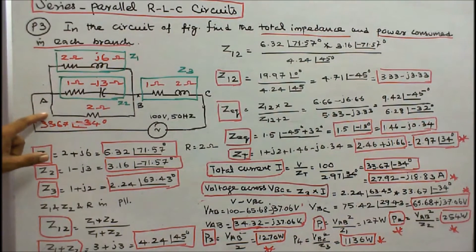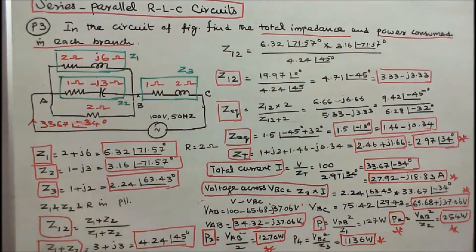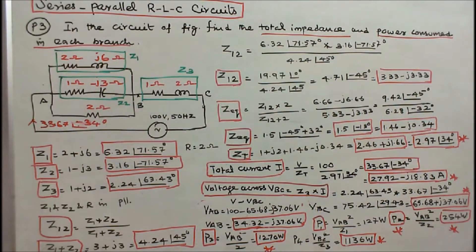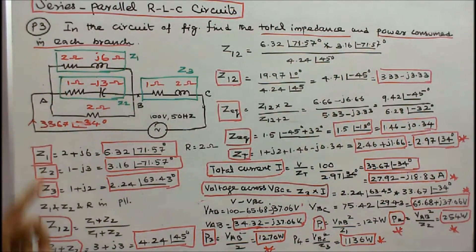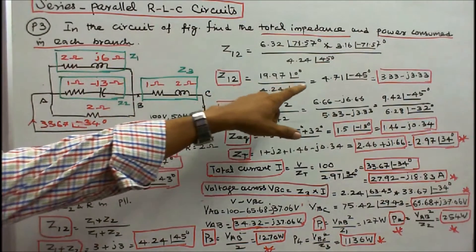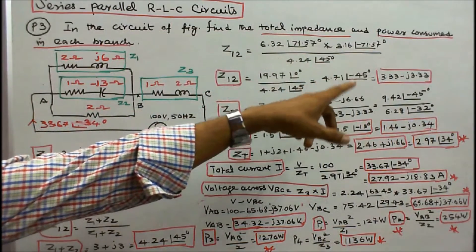Z1, Z2, and the resistor are all connected in parallel. First step: find the equivalent impedance of Z1 and Z2. Z1 + Z2 = (2 + j6) + (1 − j3) = 3 + j3 in rectangular form, or 4.24∠45° in polar form. The equivalent impedance Z12 = Z1·Z2 / (Z1 + Z2) = 4.71∠−45° in polar form, or 3.33 − j3.33 ohms in rectangular form.